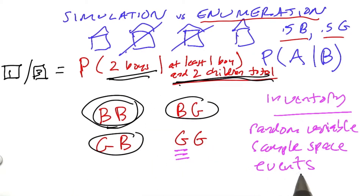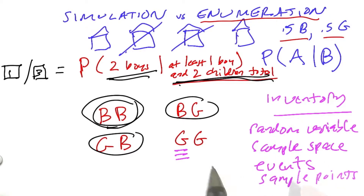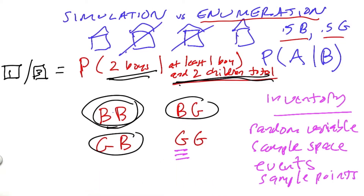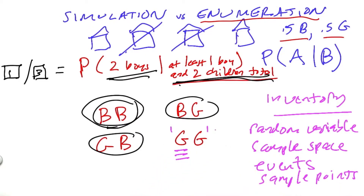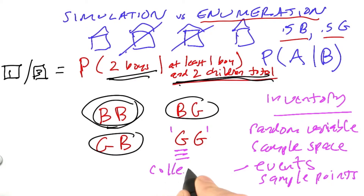An event consists then of a collection of sample points. The sample point is bg, gb, or bb. In terms of representation, we're going to represent sample points as strings — we'll have like the string gg. We can represent events two ways: as a collection of strings, or as a predicate — a function which is true of certain strings and not of others.